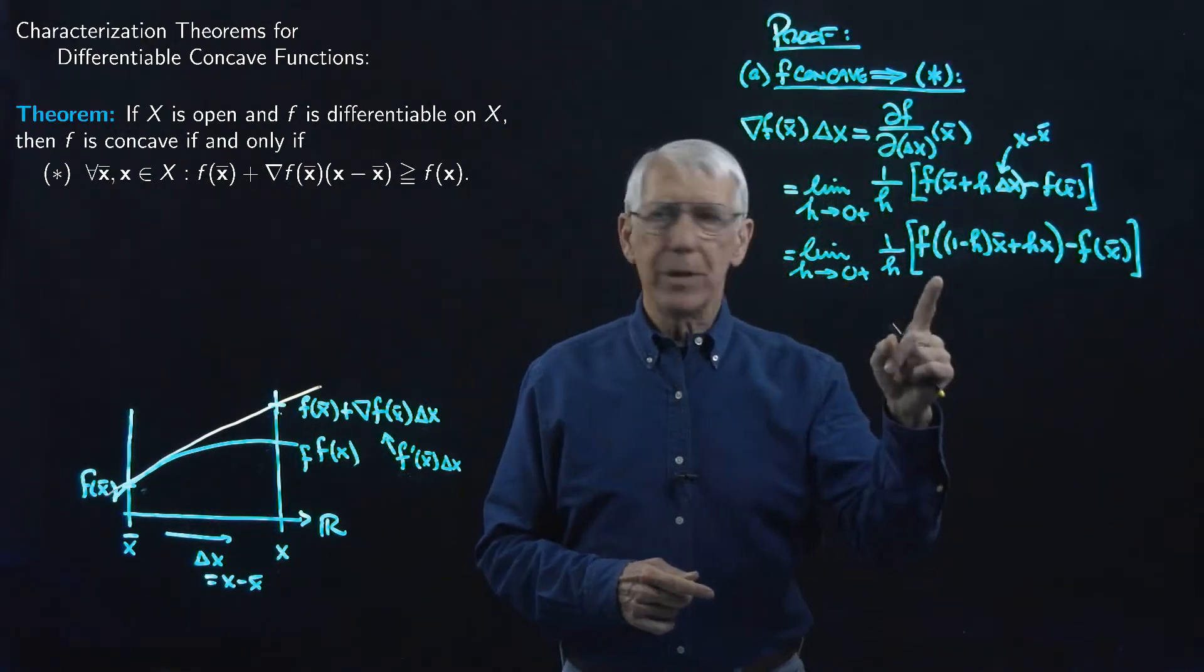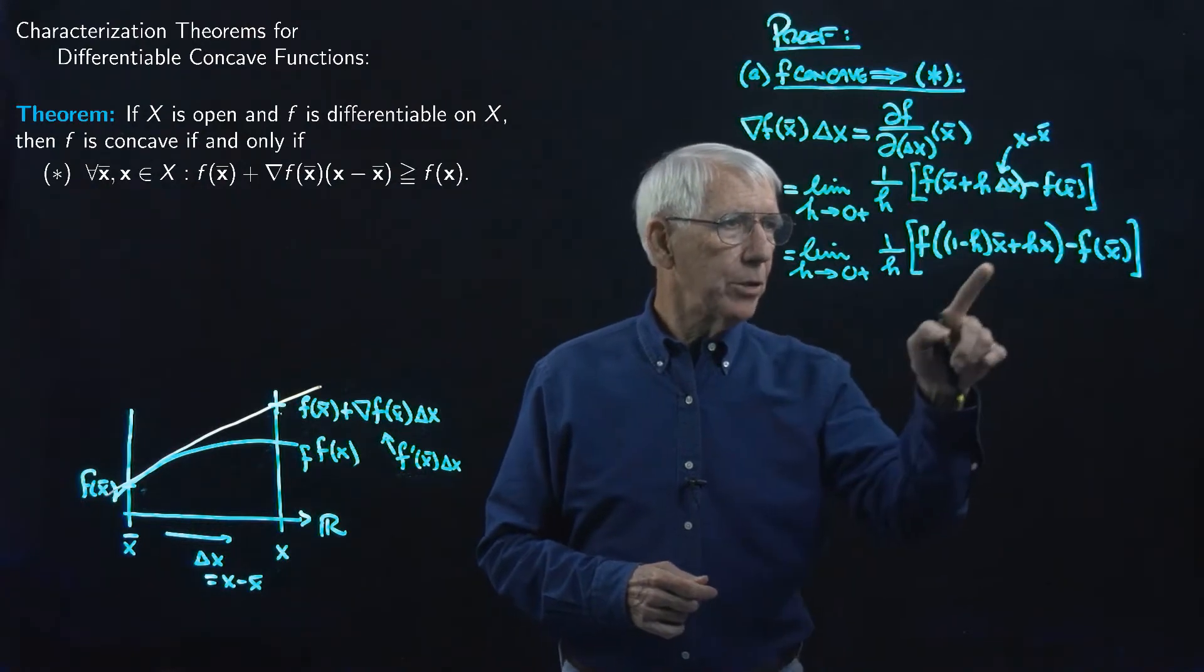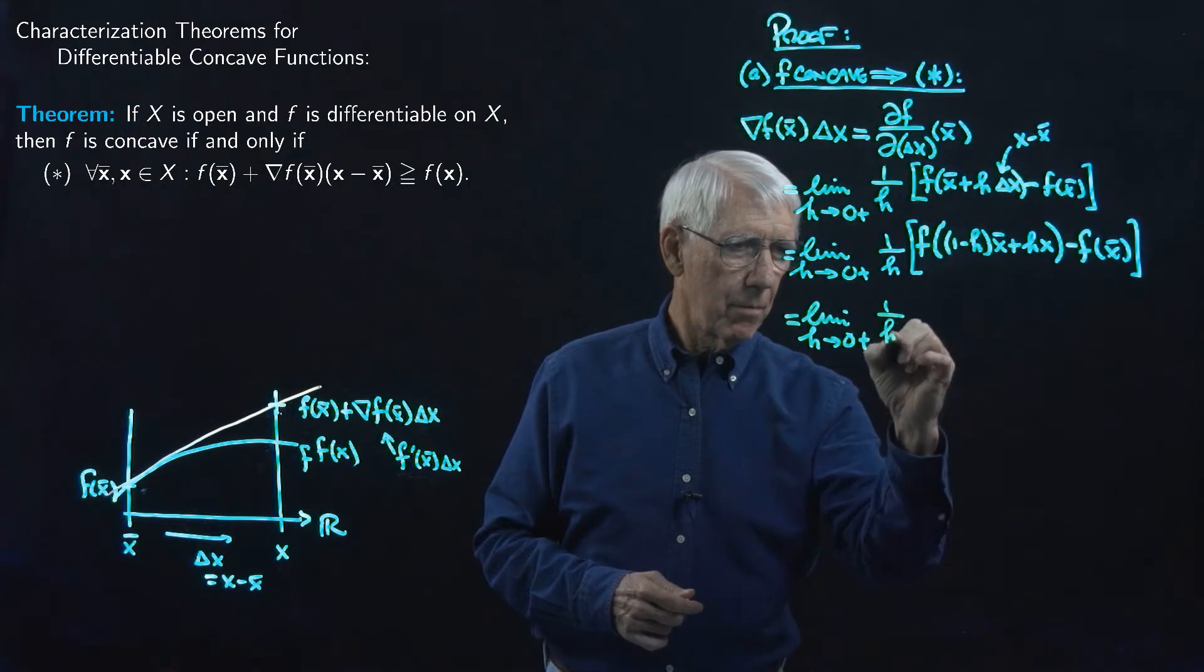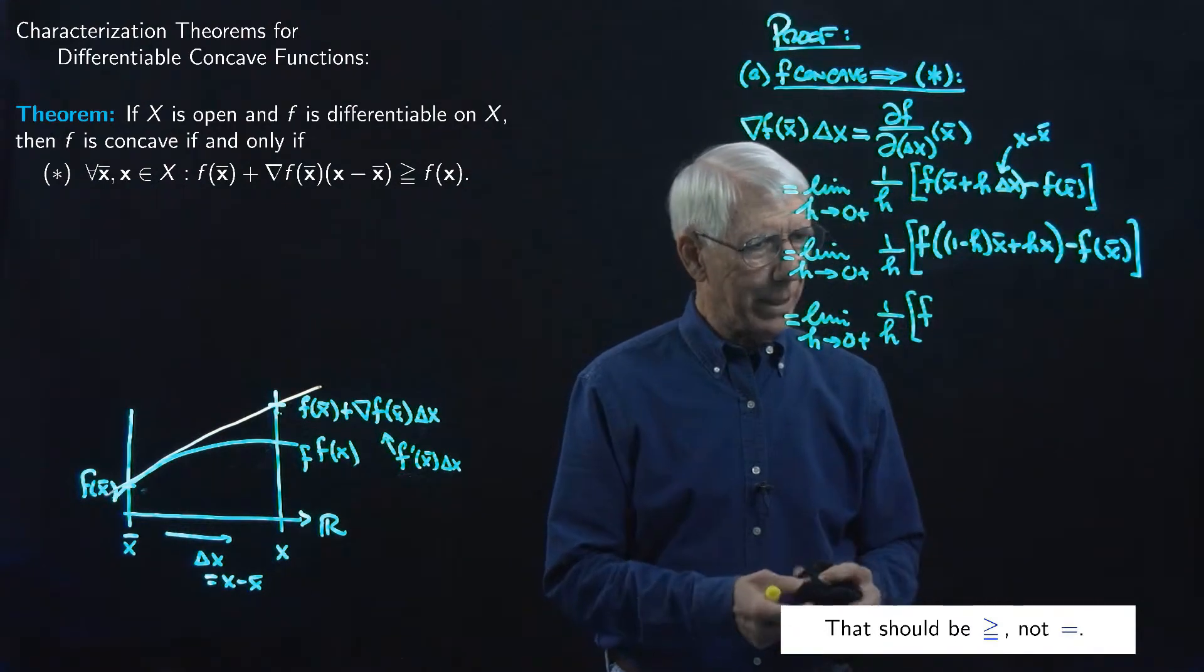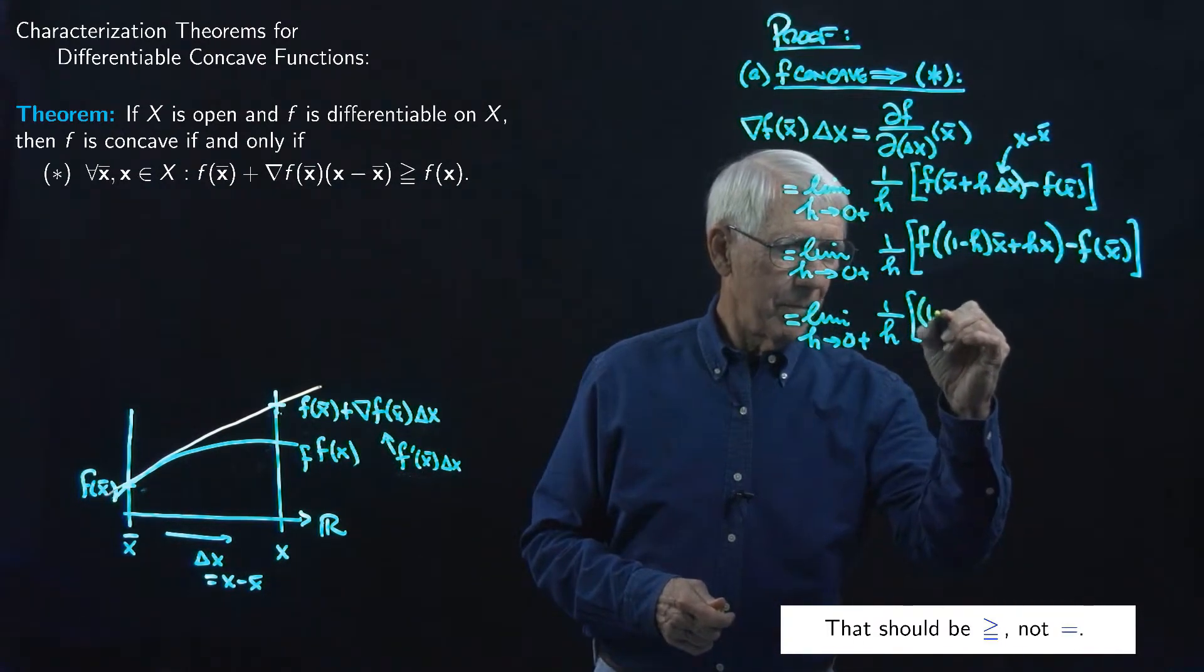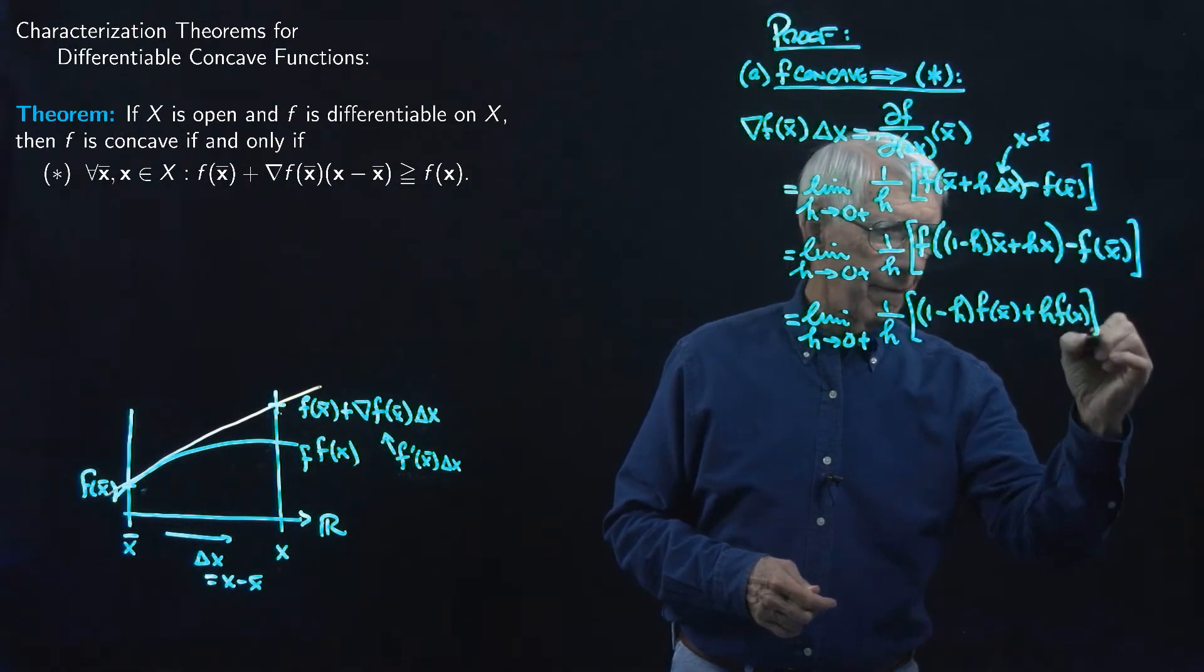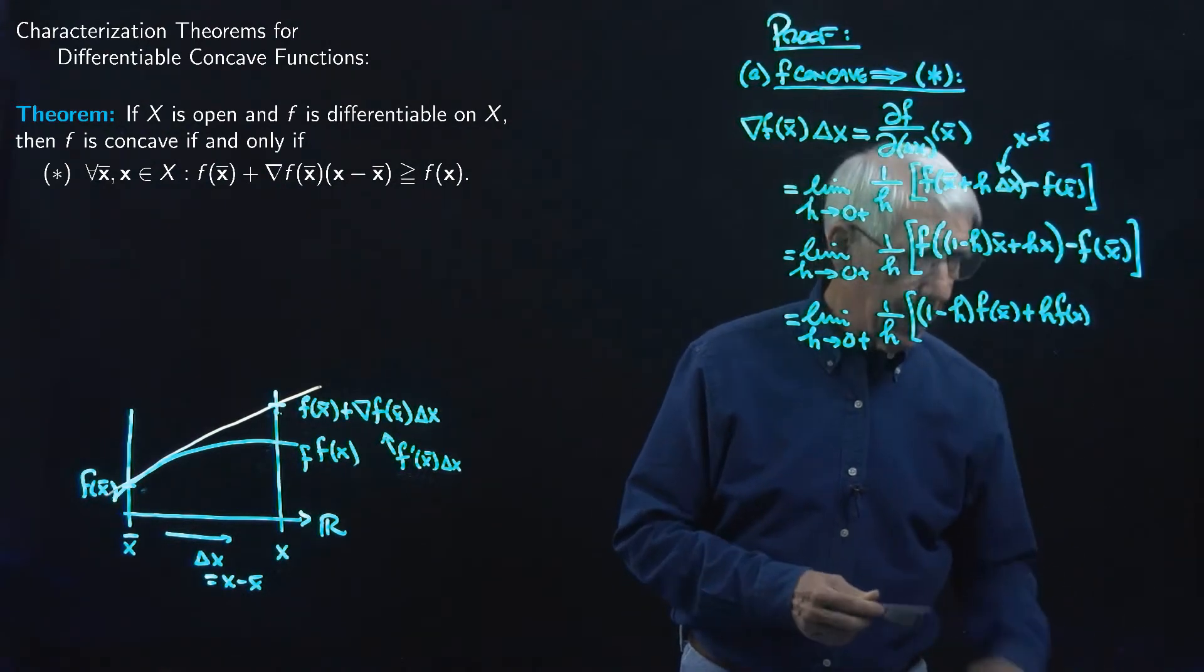And now, since F is concave, we know that this expression, F of this argument here, has got to be greater than or equal to, well we'll write this stuff over here first, let's not move quite so quickly here, let's move a little too fast. 1 minus H, F of X-bar, plus H, F of X, and then don't want to close off the brackets yet, so this then should be minus F of X-bar.